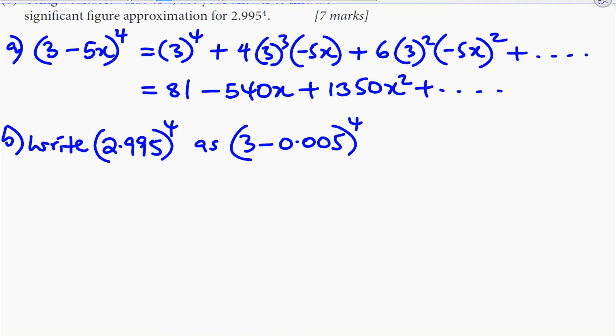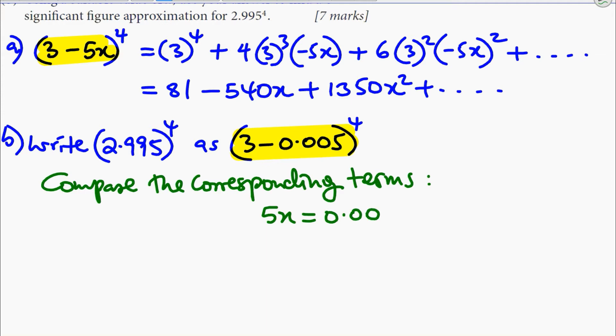That way, we can compare these two expressions. If you compare these two expressions, you can easily see that 5x will be 0.005, which means x will be equal to 0.001. Compare the corresponding terms.